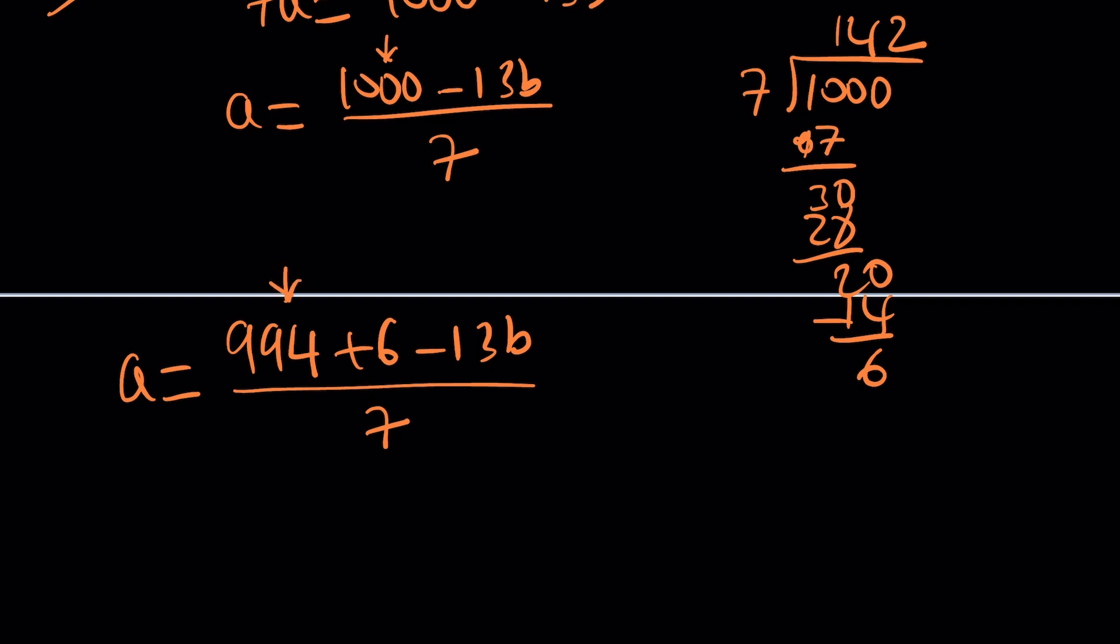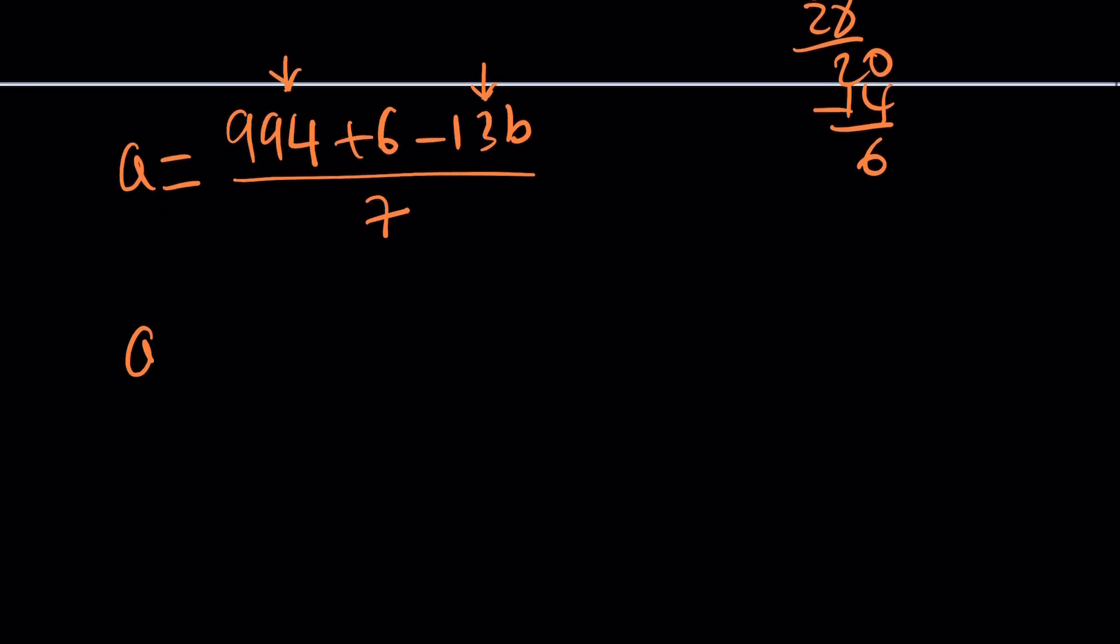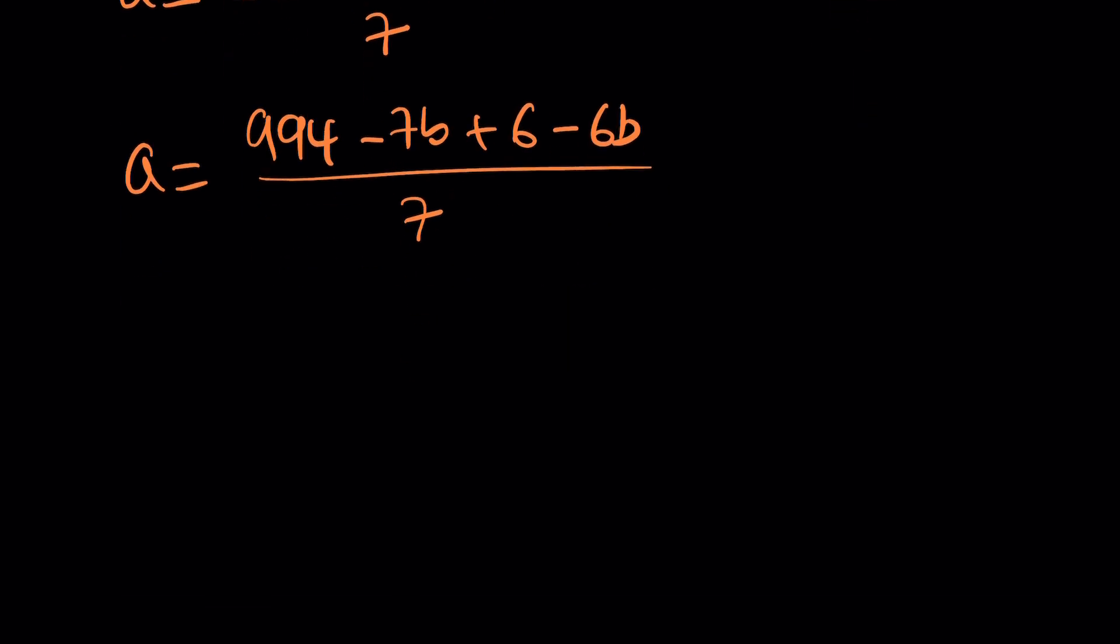You can break this down into 994 plus 6 minus 13B divided by 7. We made this divisible by 7. But is that the only thing you can make divisible by 7? There's another piece that you can make divisible by 7. It's negative 13, so we can separate a negative 7B, so write it like this: 994 minus 7B. And the remaining piece will be 6 minus 6B, because negative 7 plus negative 6 is negative 13.